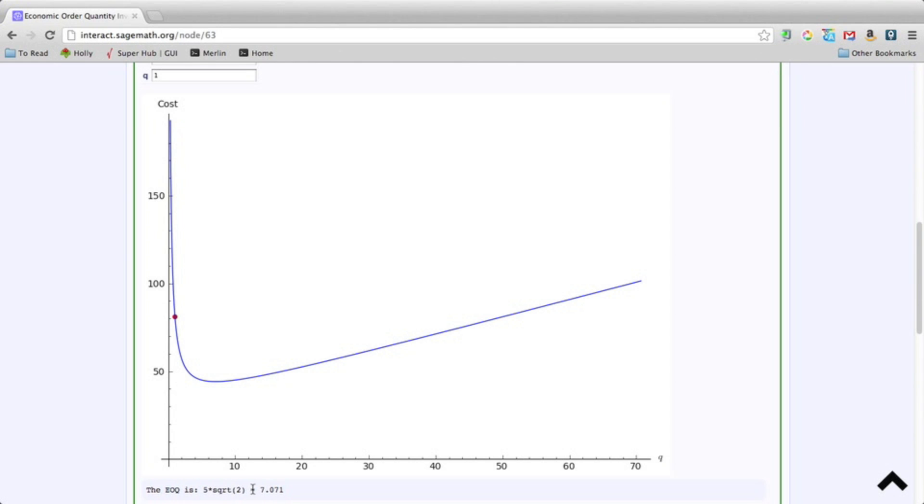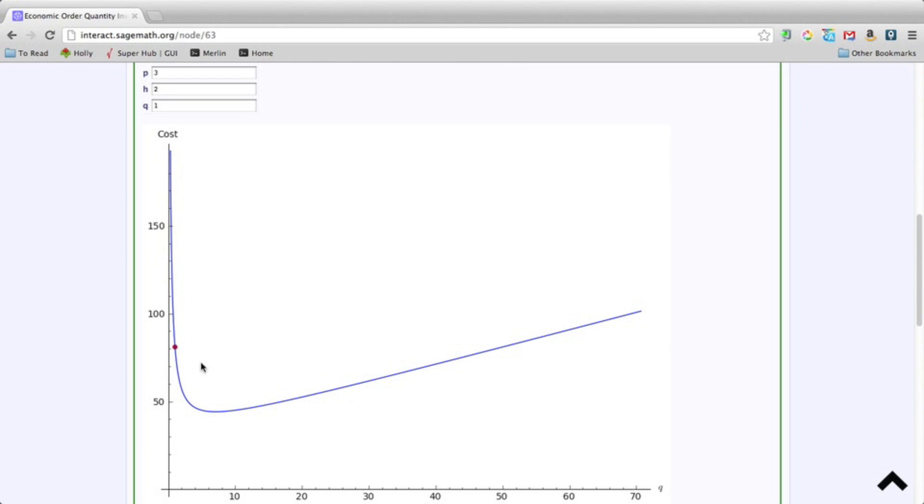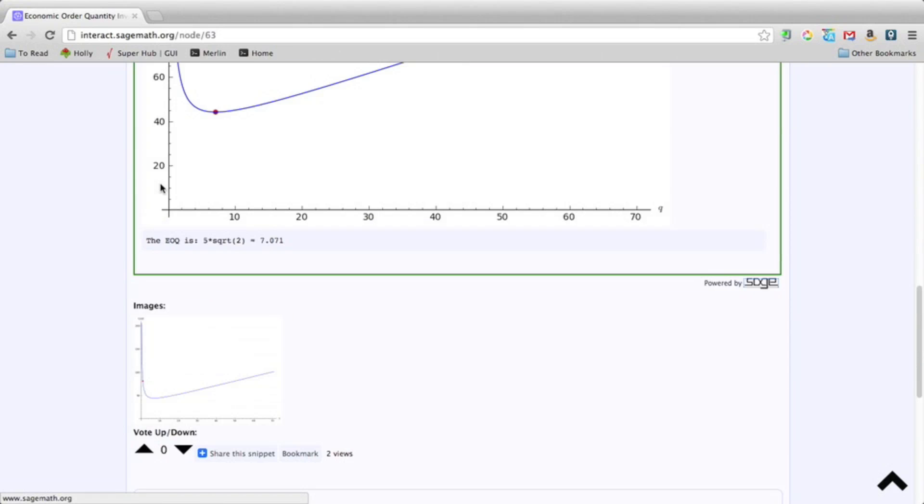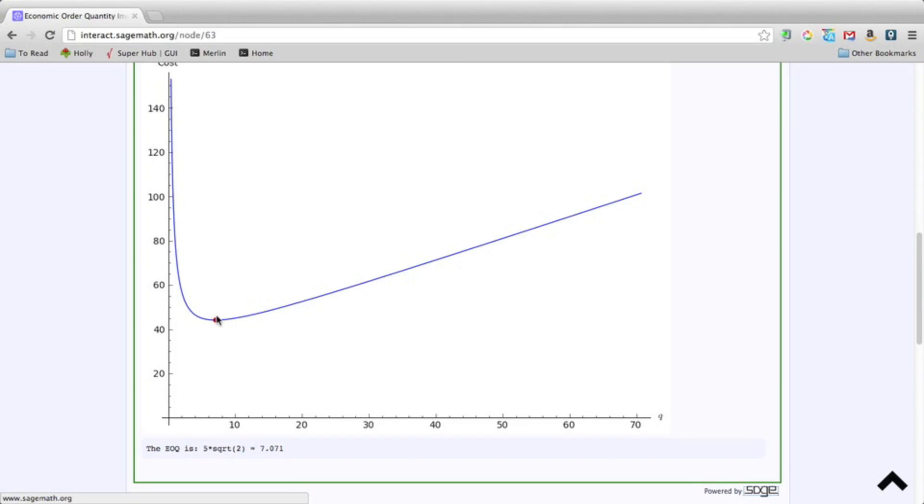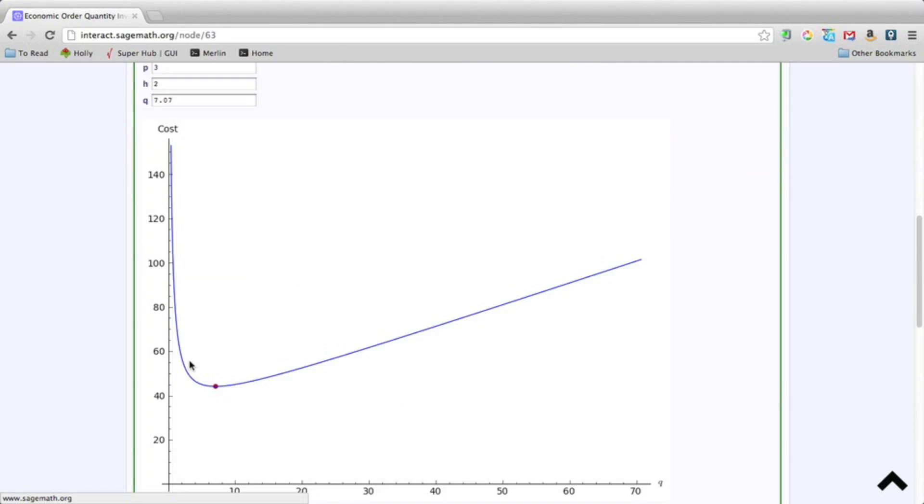So it's 5 square root of 2, which is just 7.07. So that's actually the cost with Q equals 1. So if I change that to 7.07, it re-graphs and puts the point at what looks like the minimum value. So this is just one simple inventory model. There are a whole bunch of inventory models. But that's how inventory theory works. Feel free to play around with the SAGE code and try different values and see what happens.